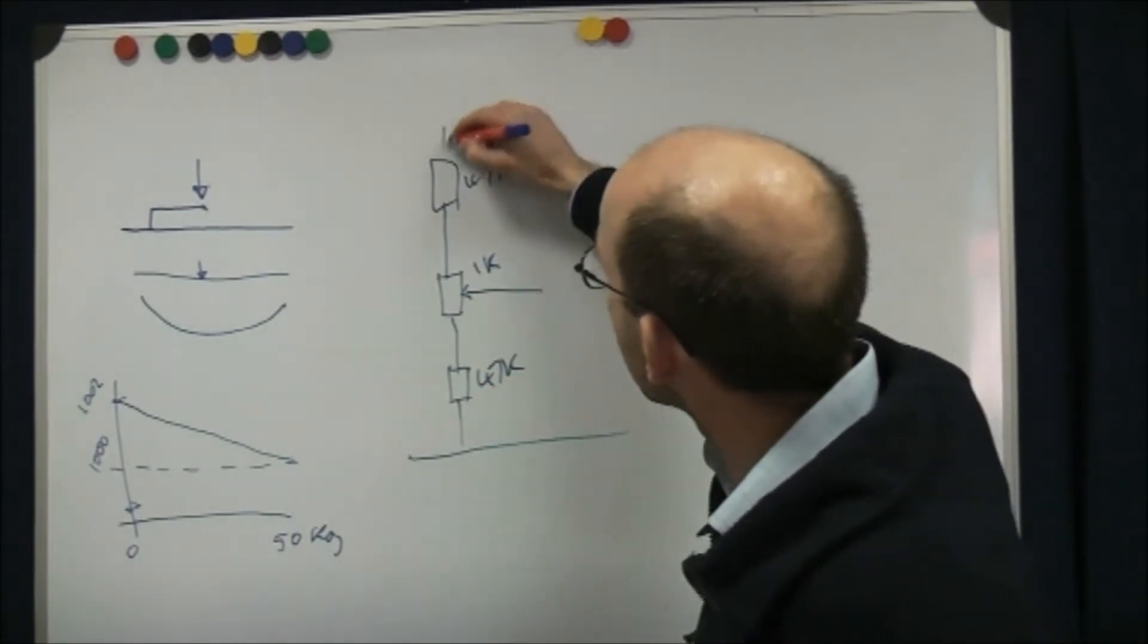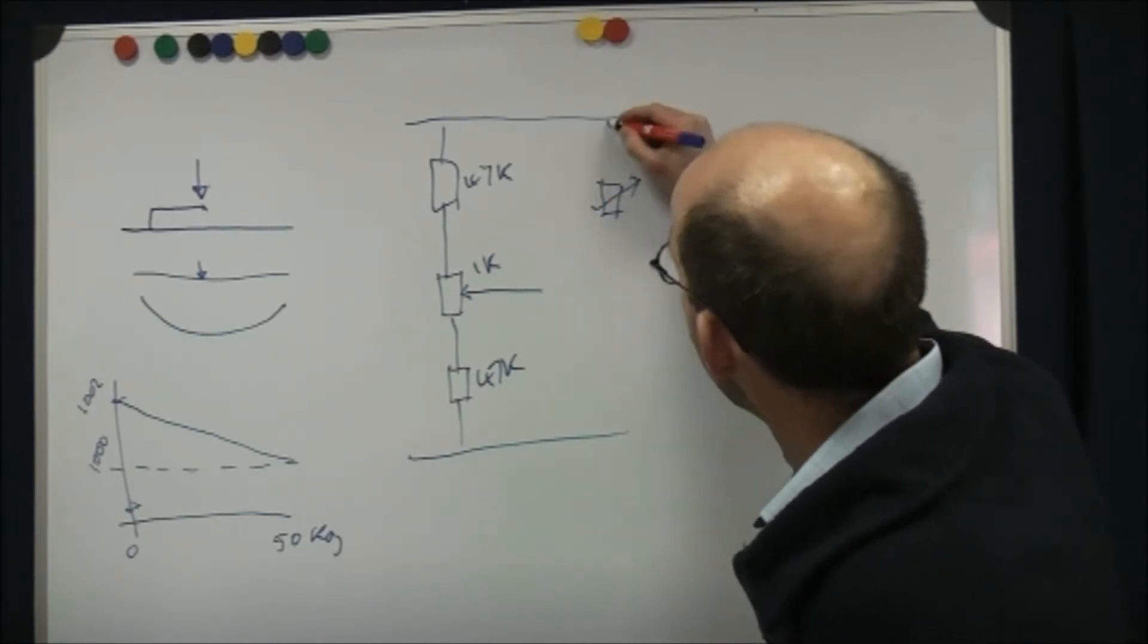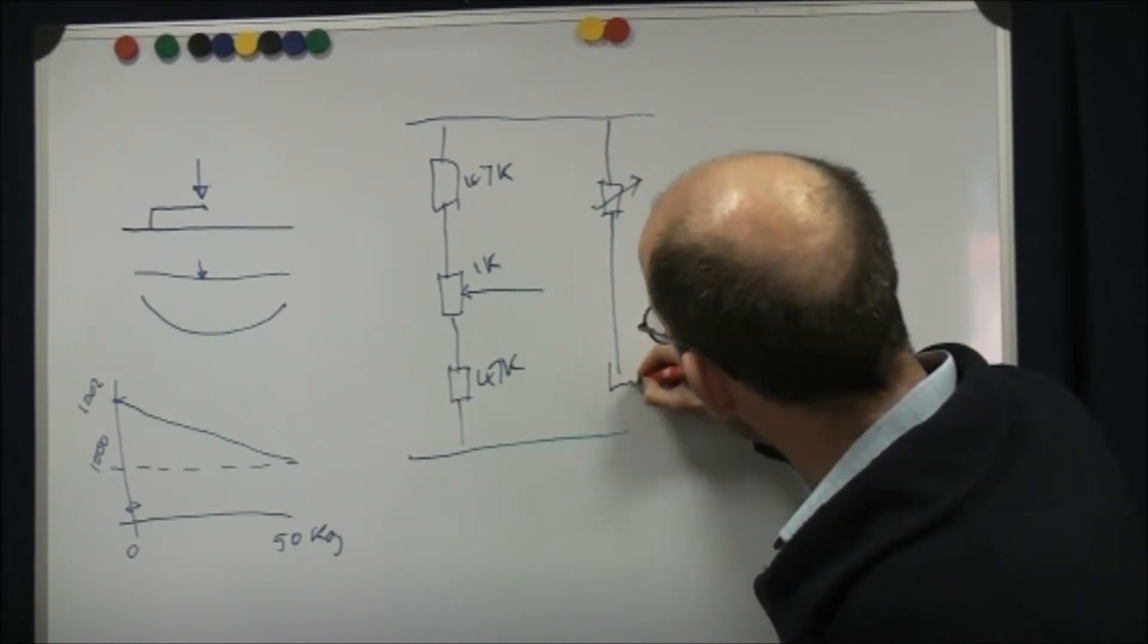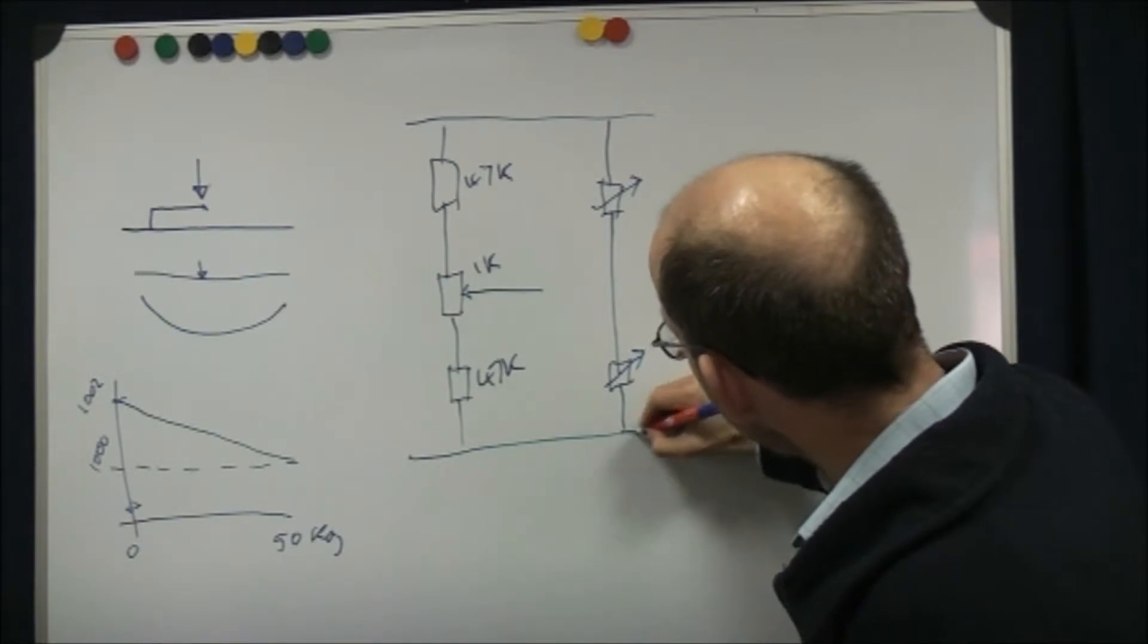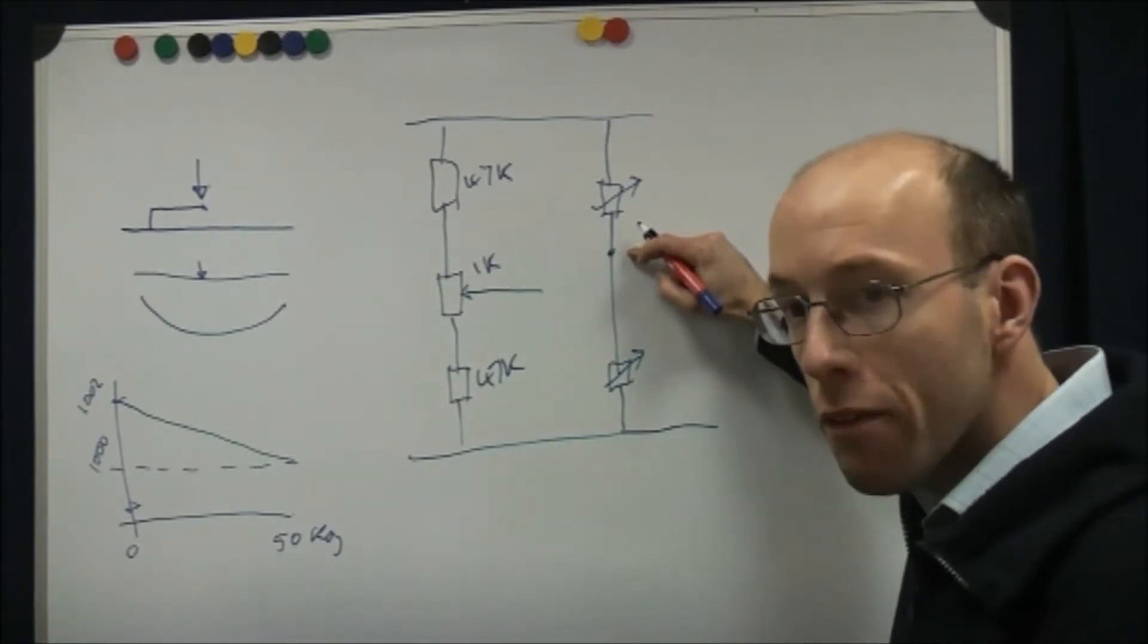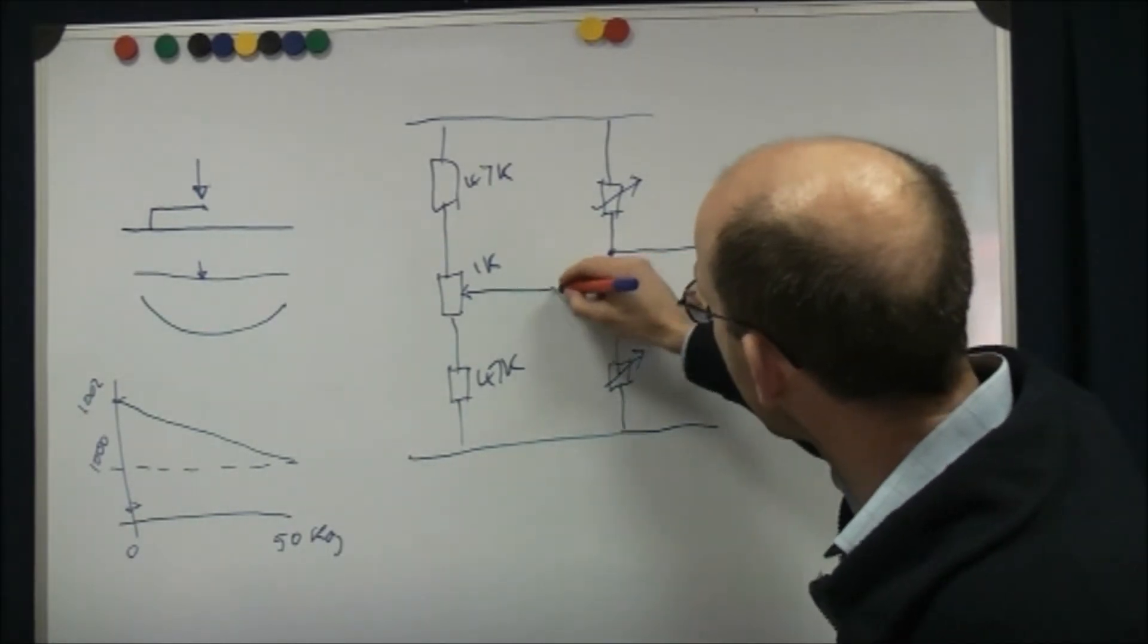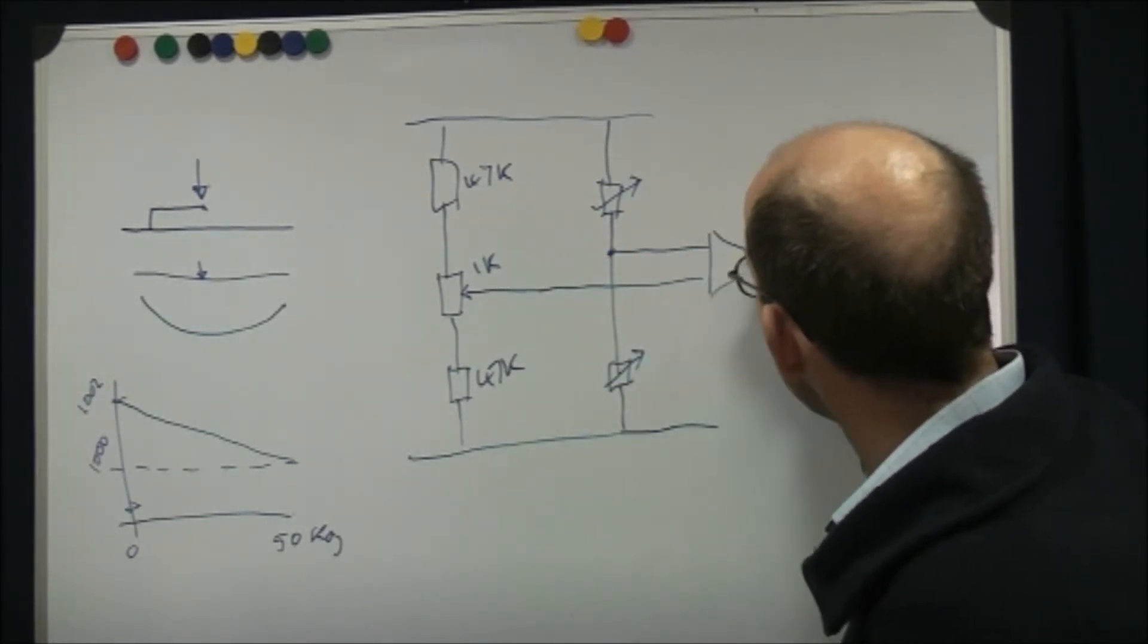So we're going to connect that across the power rails. Meanwhile, the sensor itself has two elements to it. If we draw those both in, this point here is going to move up and down around that center point, comparative to this. And what we're going to be looking for is the difference between those two.